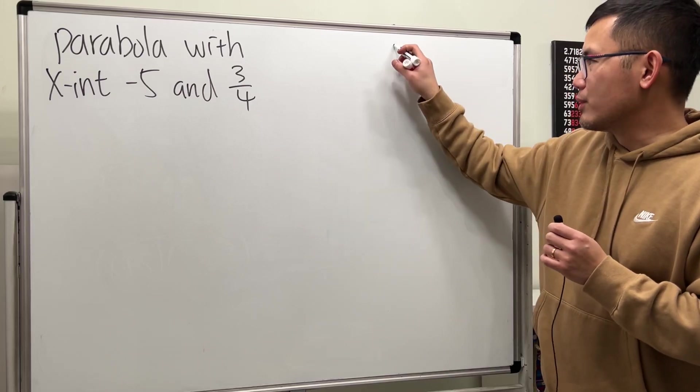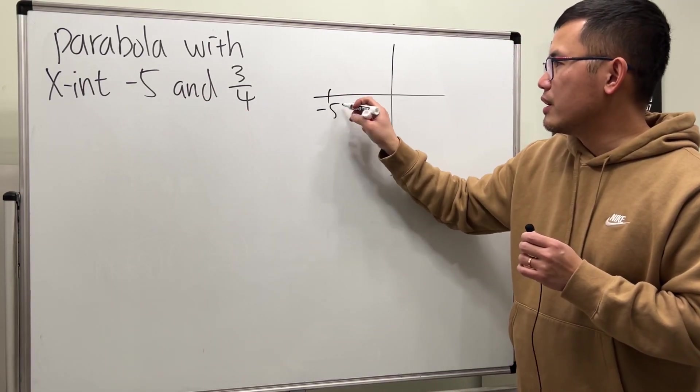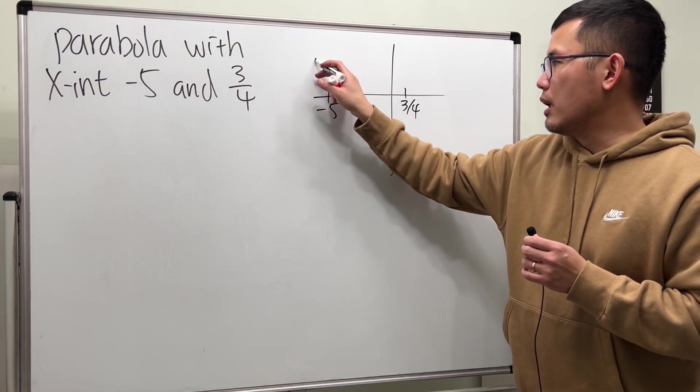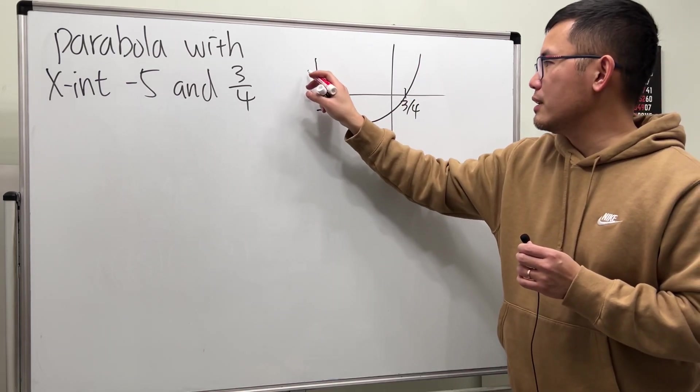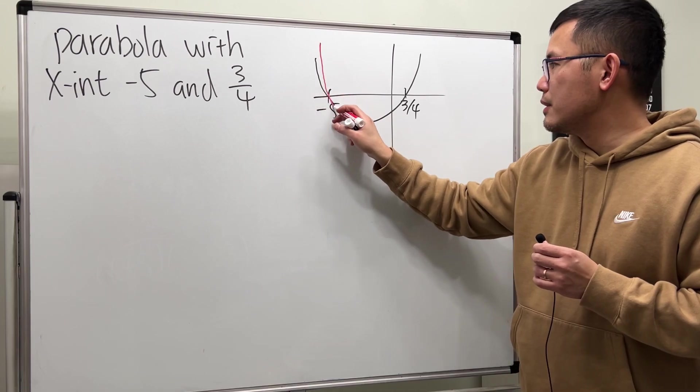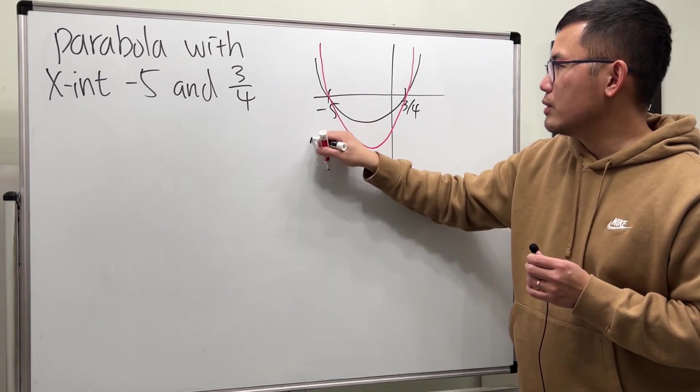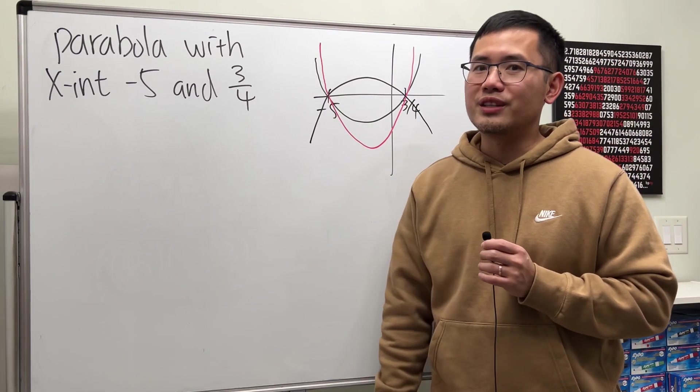Because, let's have a look right here. Let's say negative 5 is somewhere here, and let's say 3 over 4 is somewhere here. Well, I can draw the parabola like this. Or, I could have done it like this. Right? Or, I can put it opening down. You see, we have infinitely many answers for it.